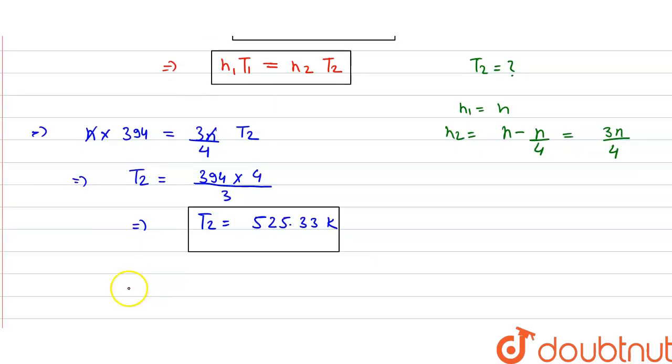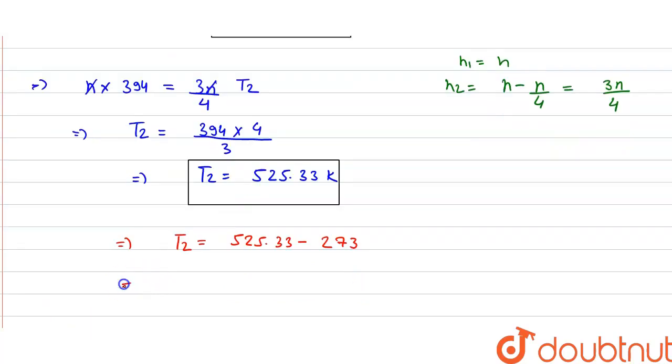Now if we want to convert to Celsius we can subtract it from 273. So T2 equals 525.33 minus 273. Finally we will get the value of T2 equal to 252.33 degrees Celsius and that's our required answer.